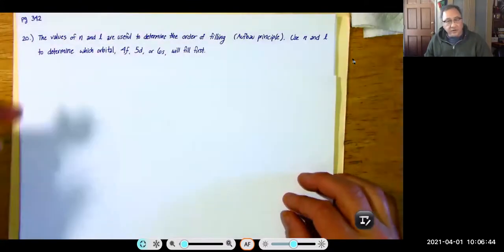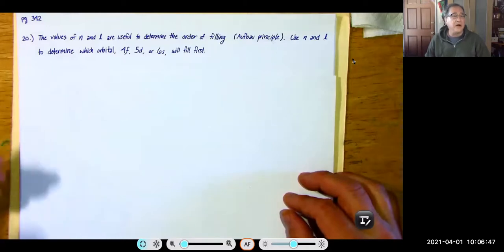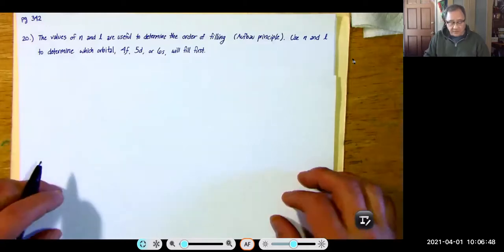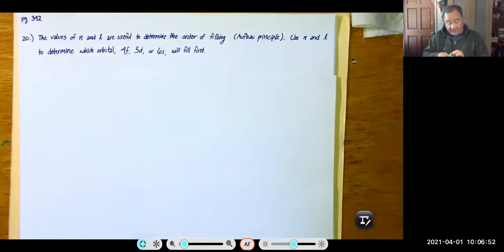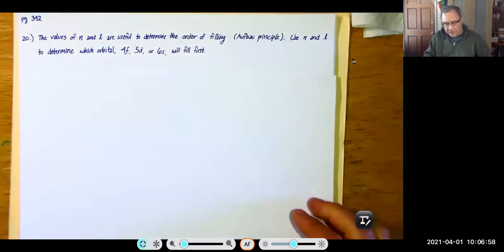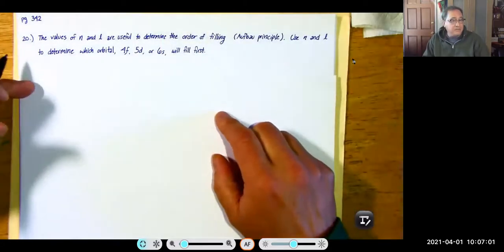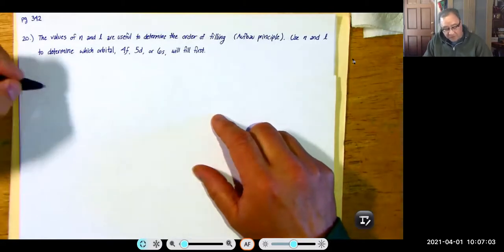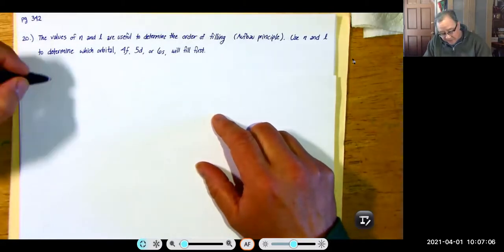We're going to do some problems from chapter seven. Here's number 20. We're going to use the Aufbau principle to determine the filling order. This is not my preferred filling order. My preferred filling order is to use the SPDF method, and that's what I teach.